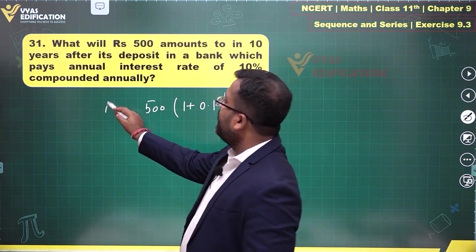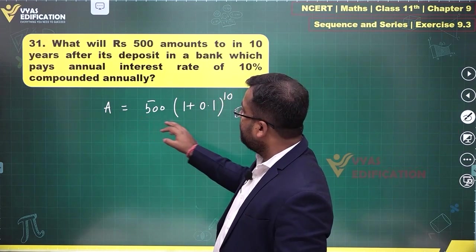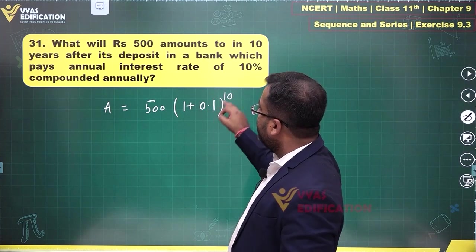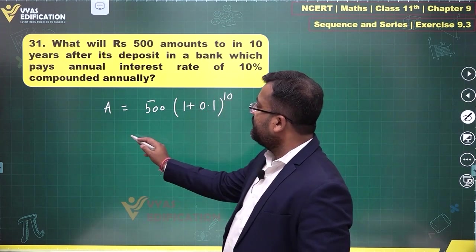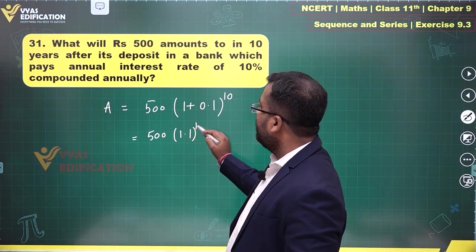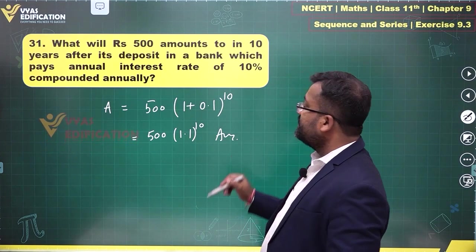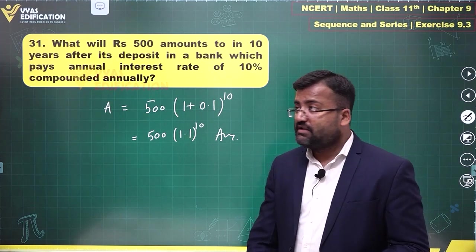That's the required amount. If you recall the formula for amount using compound interest: principal times 1 plus R upon 100 raised to the number of times it is compounded. That's what we have. This is 500 times 1.1 raised to the power 10. That's my required answer for this question. It's just pretty simple. There's nothing difficult in this.